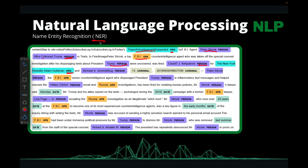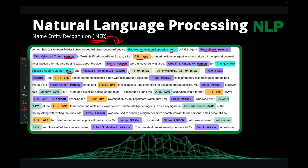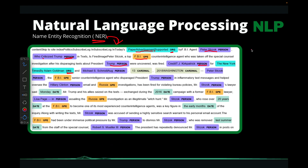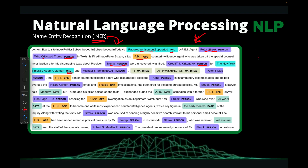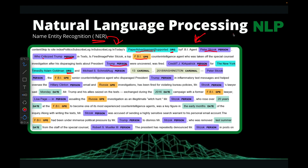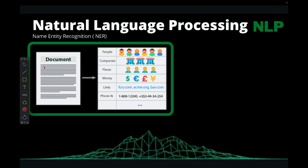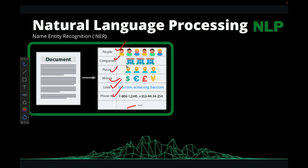The Named Entity Recognition model is going to go through the entire document and identify the various named entities for us. That's basically the task. So if you have customer feedback or customer complaints, you want to go through the complaints and identify what the customer is actually referring to, so you can refer that particular customer to the appropriate department to deal with that particular issue. What we are trying to extract are things like people, companies, places, money, links, phone numbers, and so on.